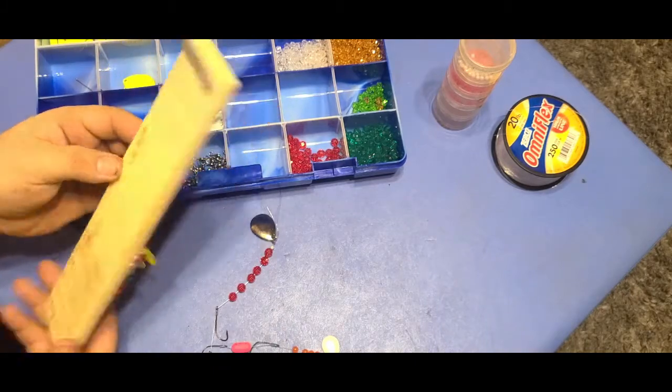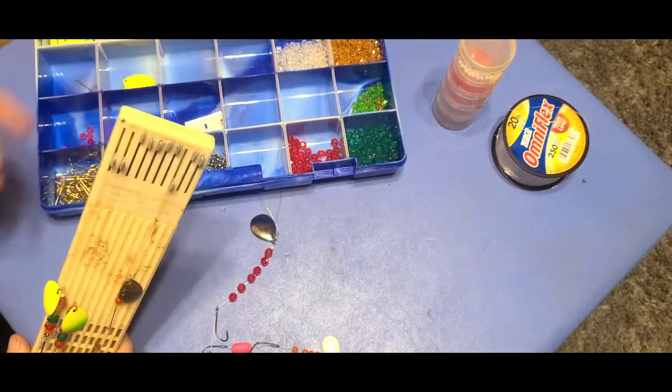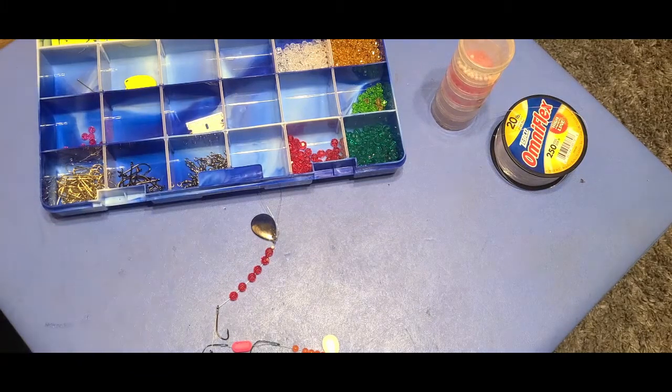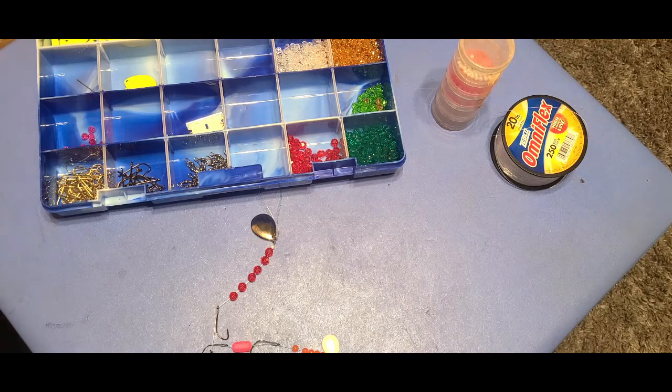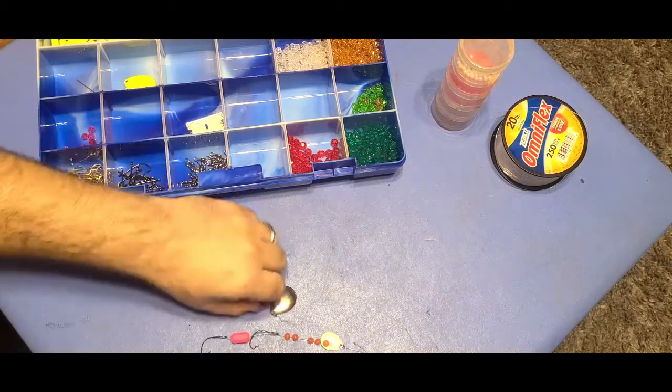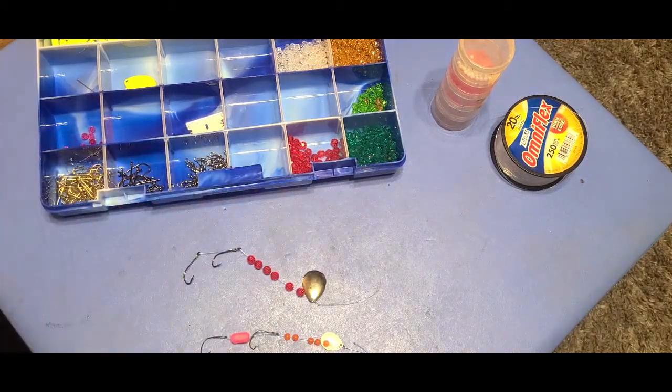The convenient thing about these shorter ones, they're easy enough to put on one of these snell hook holders. The ones when they have three feet of line, you're going to have to have something a little bit different to store those with. I know they make holders for it. This is the way I've always been taught to make them, it's the way I've always made them.